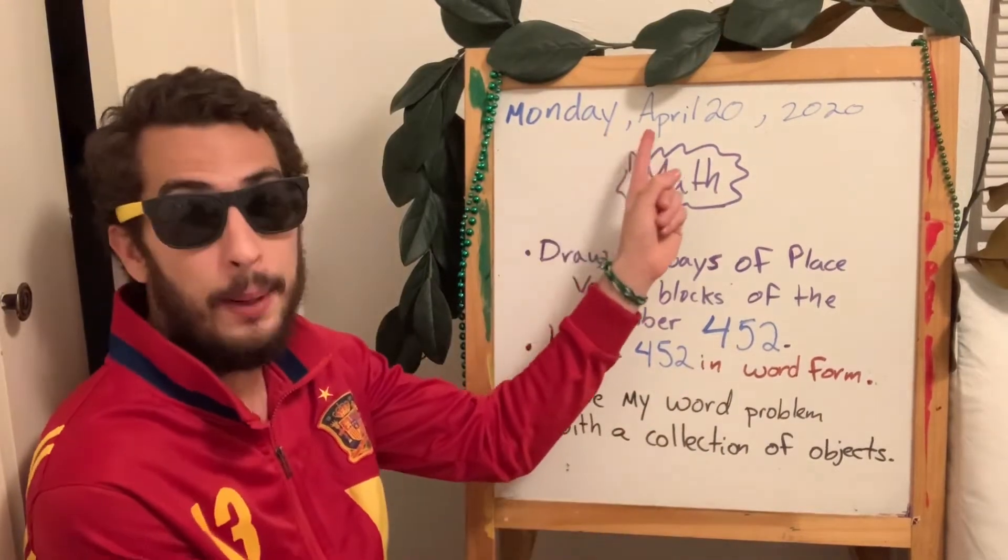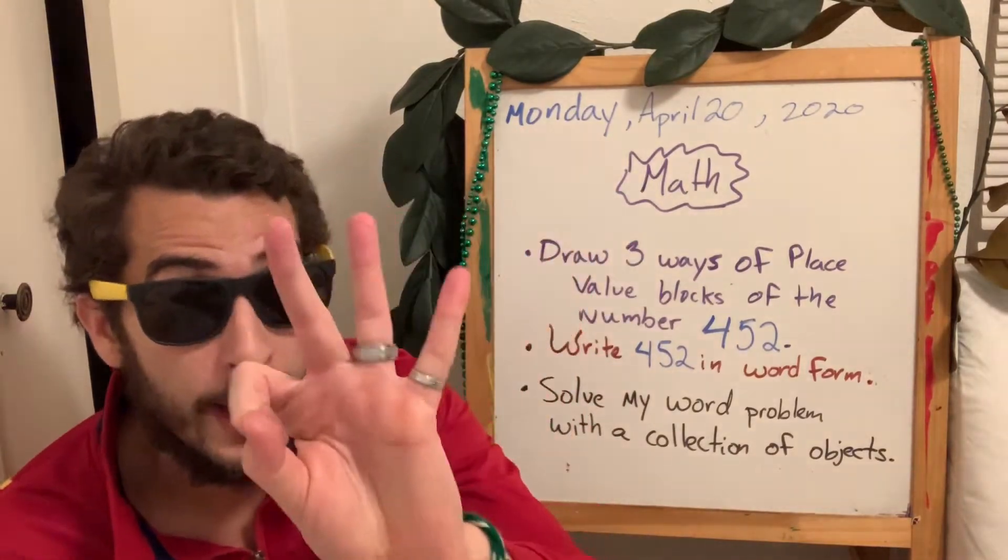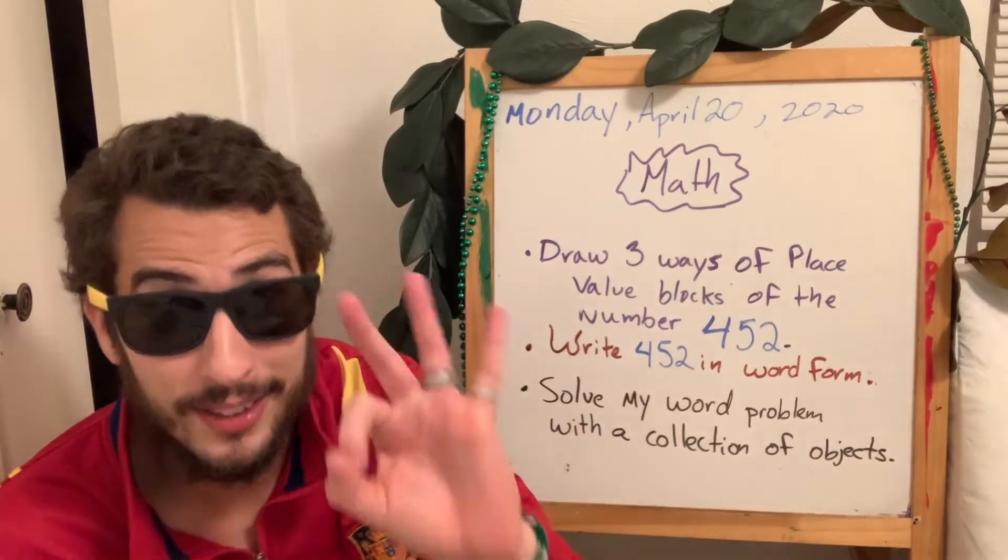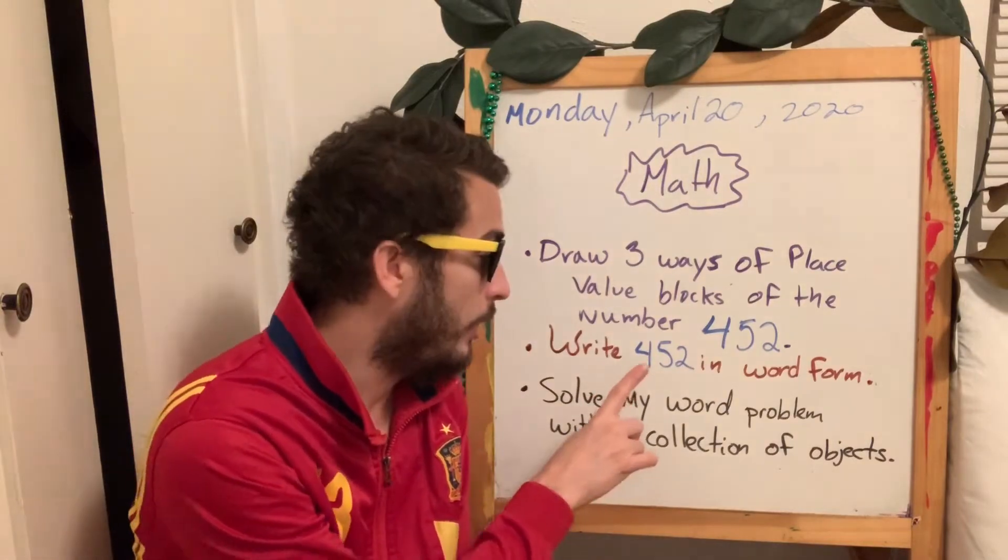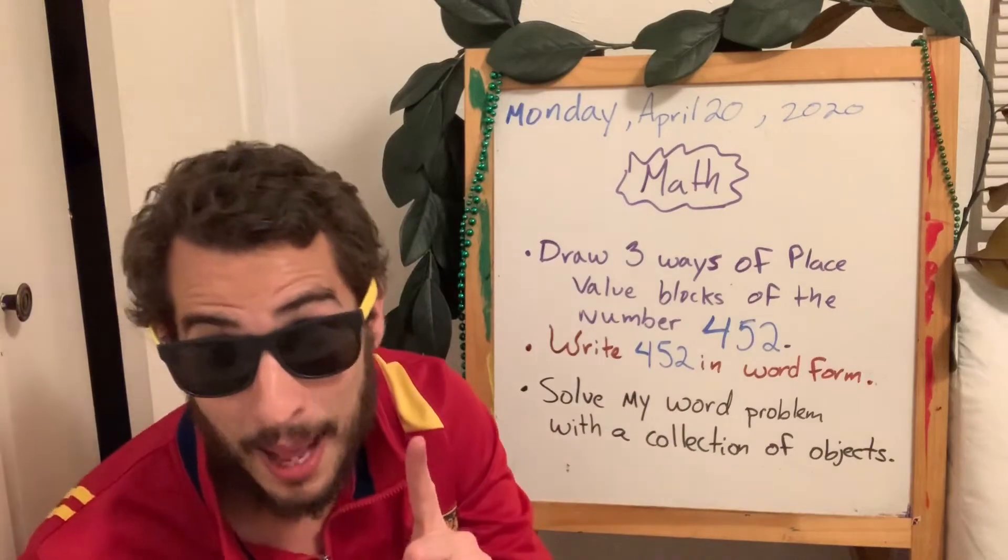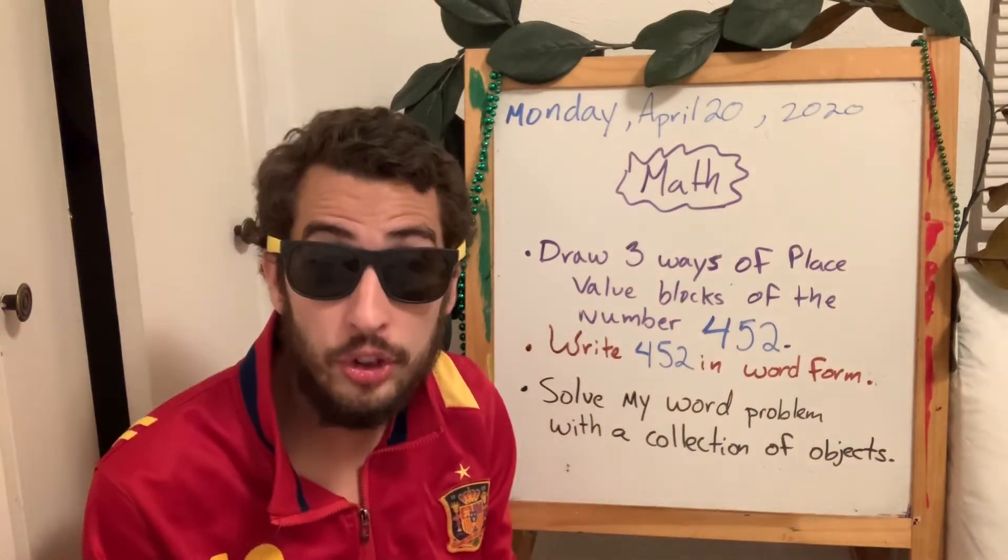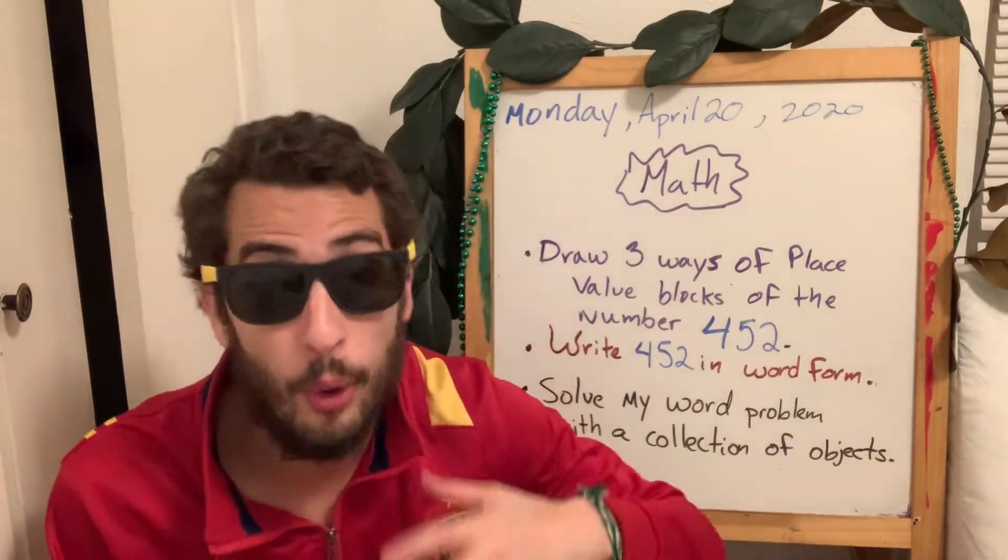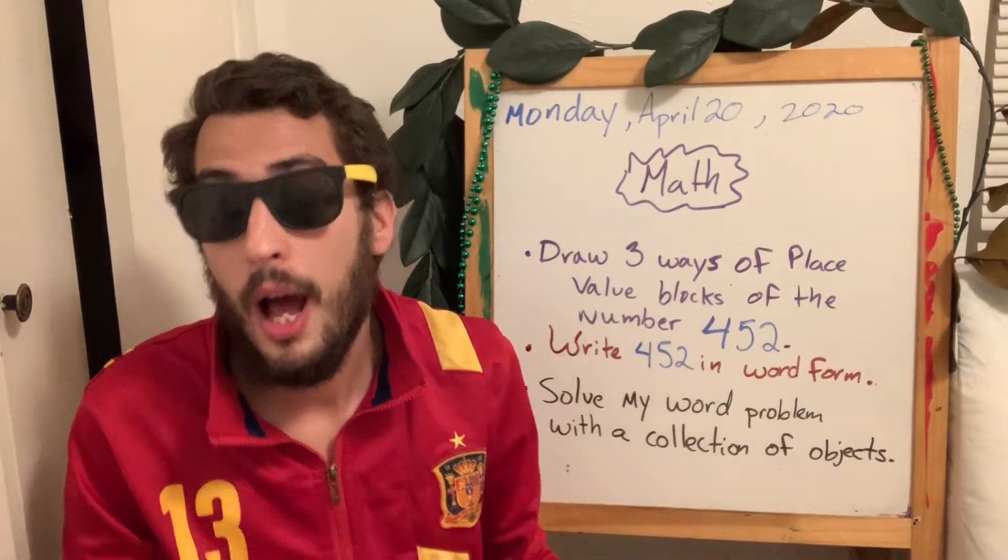Today is Monday, April 20, 2020. On math you're going to draw three ways of place value blocks of the number 452. Vas a dibujar tres formas diferentes del base 10 block. I will show you that later. Then you're going to write in word form 452 en palabras. The last thing you're doing, you're going to solve my word problem using some collective or collection of objects. Some toys or some marbles or if you don't have toys or you don't have nothing to collect then you can use a drawing. Puedes hacer dibujos.